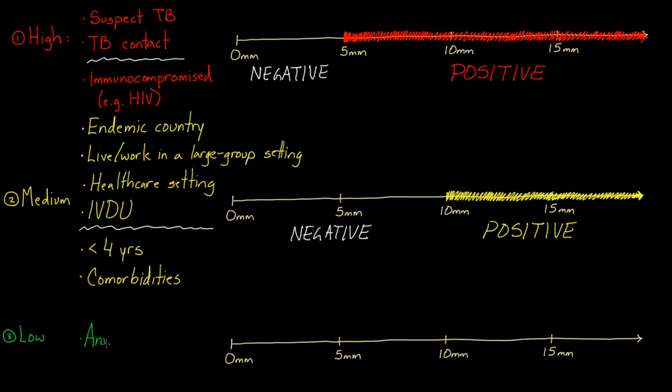So down here, we have anyone else. Anyone that doesn't fit into the other categories fits into this final one—the low-risk category. And for these folks, 15 millimeters or greater are needed to be considered positive. So if you have someone that is very healthy and doesn't fit into any of the other things we just talked about, and their PPD is 20 millimeters, then they would be considered positive. But if it was only 13 millimeters, somewhere in this other range down here, then they would be considered negative. So you basically measure the induration, think about what risk group a person falls into—high, medium, or low—and then you organize it using these graphs. Very easy. So above 5 or above 10 or above 15 tells you which is considered positive versus negative.